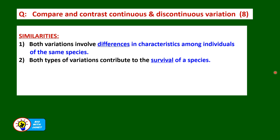Both types of variations contribute to the survival of a species. Survival means the ability to live on, continue to live on and not become extinct. Every species is trying to survive in this world through the changing environment. Like the Biston Betularia, or Peppered Moth — variation helped in the survival of the species when the environment changed due to air pollution.